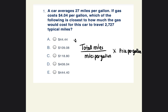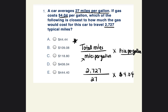Go ahead and write this down. Now let's insert the information we were given. The total miles traveled are 2,727. The miles per gallon is 27, so we put 27 on the bottom. Then we multiply by the price per gallon, which is $4.04. So 2,727 divided by 27 equals 101, times 4.04, which totals $408.04.